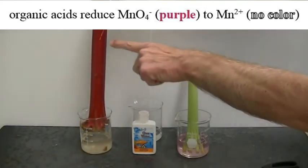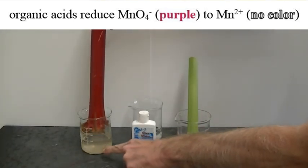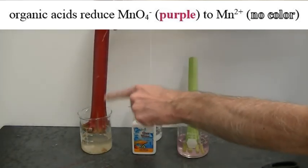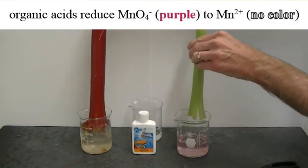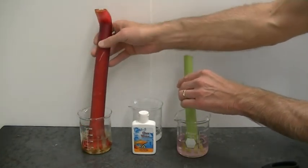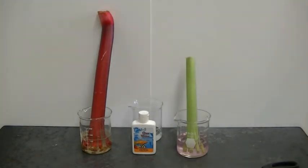So if you guessed that the rhubarb has more organic acids in it, well, it looks like you'd be right. The potassium permanganate has been reduced. We no longer see the purple color indicating that there are plenty of organic acids present in the rhubarb while there is comparatively very little in the celery stalk. So remember that the next time you eat a little bit of rhubarb pie, that tart, sour flavor that you taste in rhubarb pie is due to the presence of organic acids in your stalk of rhubarb.